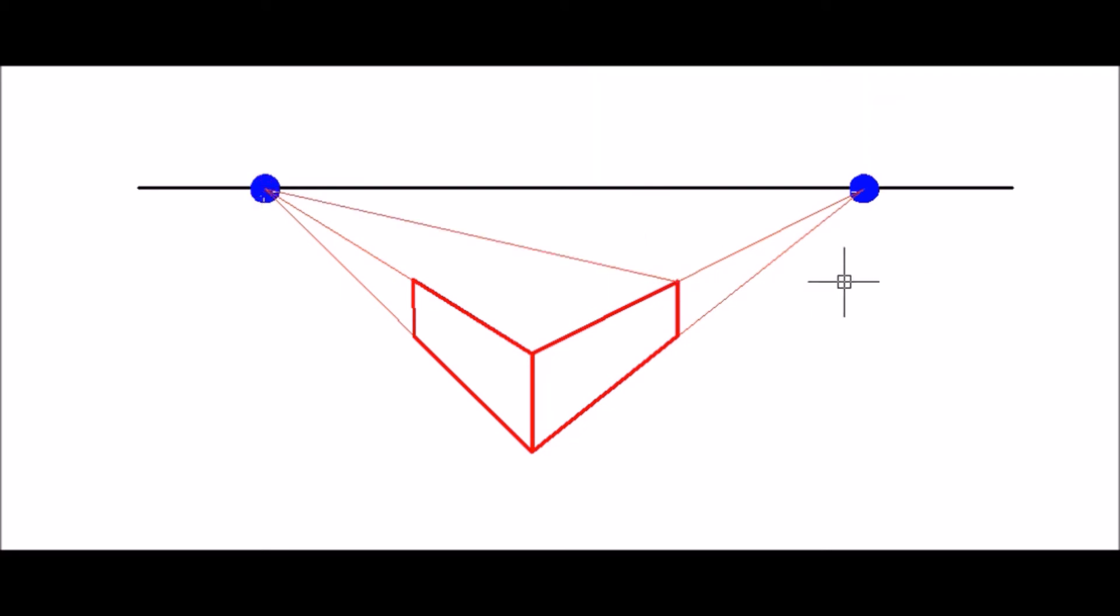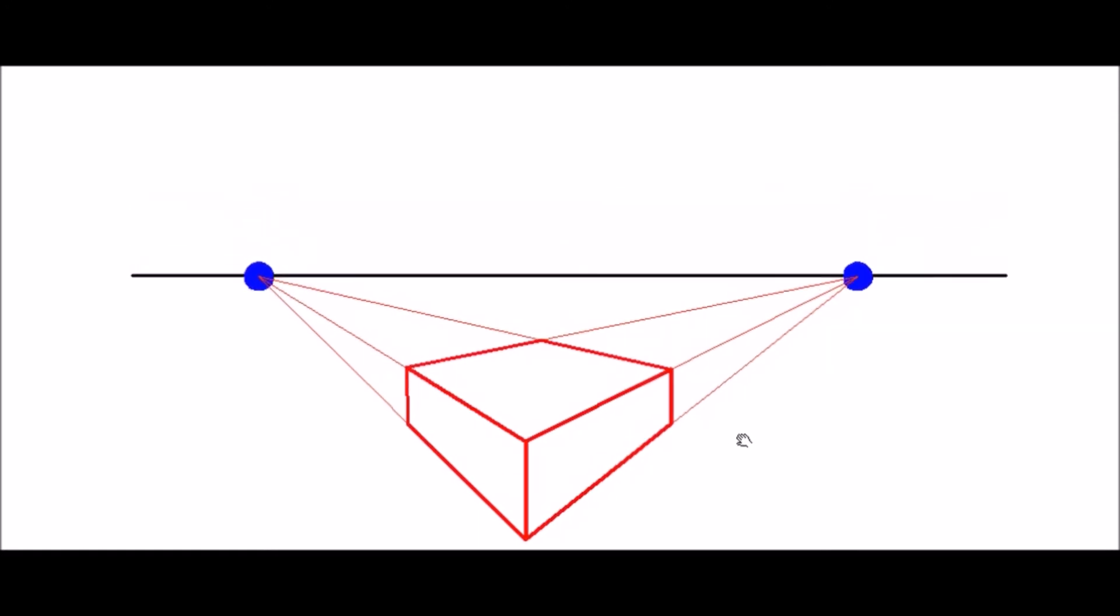Now drawing more extension lines from the ends of the length of the two faces, we can get the other length and width of the other face of the cube. So our cube is complete using the two-point perspective.